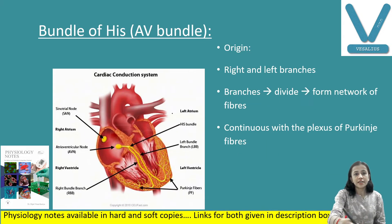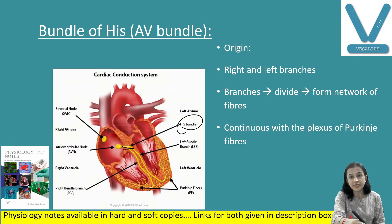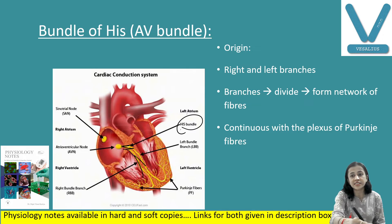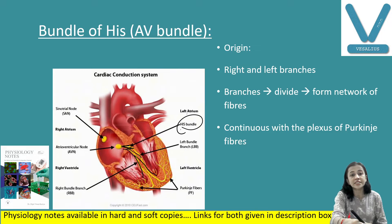The AV bundle, or bundle of His, originates from the AV node and runs towards the posterior margin of the membranous interventricular septum, then passes forward and is N-shaped. It divides into right and left branches. The left branch pierces the membrane and lies on the upper border. Both branches divide repeatedly and form a network of fibers lying sub-endocardially — these are the Purkinje fibers, which are continuous with the terminal bundle branches.